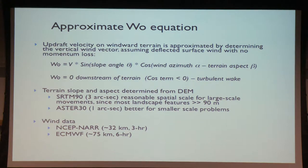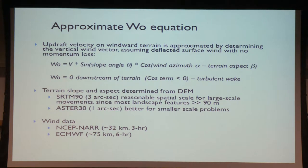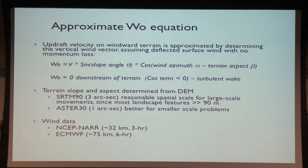We've heard several times at this conference about the importance of scale matching — I'll repeat that. If you're looking at very high-resolution one-hertz tracks of circling vultures, neither the NARR at 32 km or the ECMWF at 75 km may be what you need. You really have to think carefully as a user about the product you're getting out of the system.